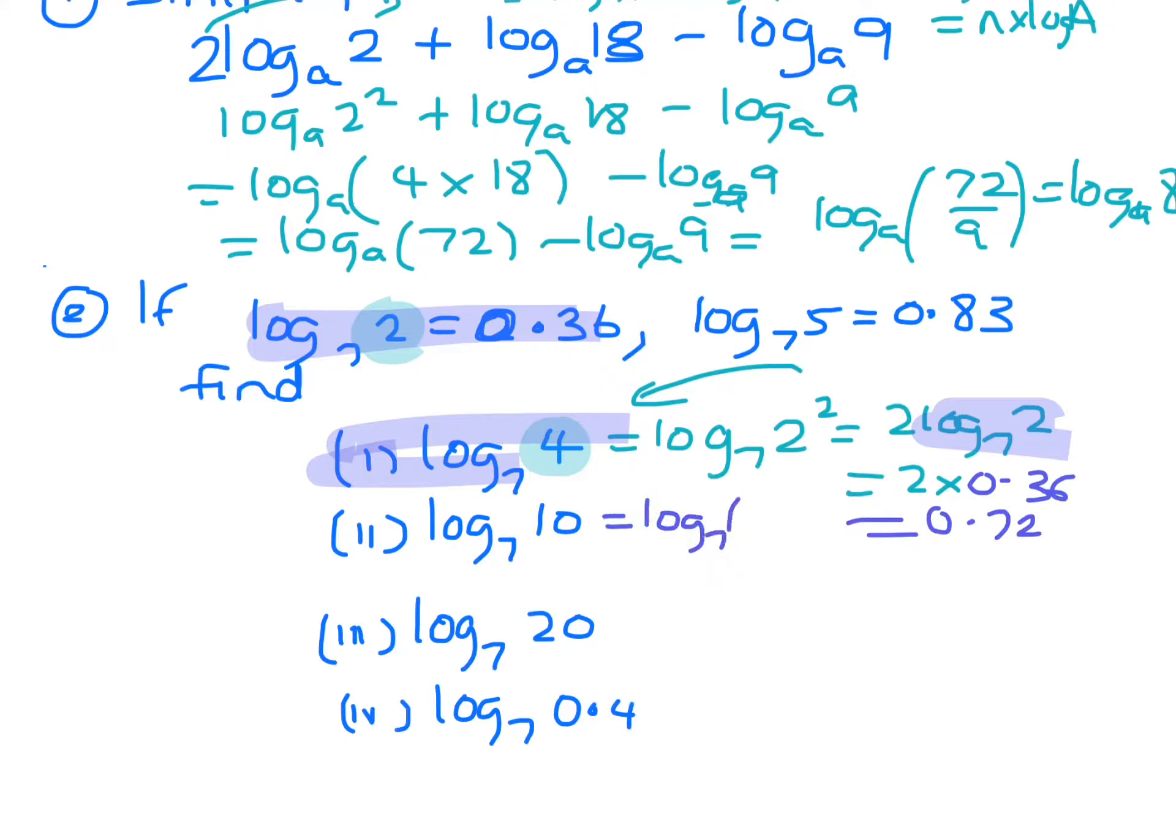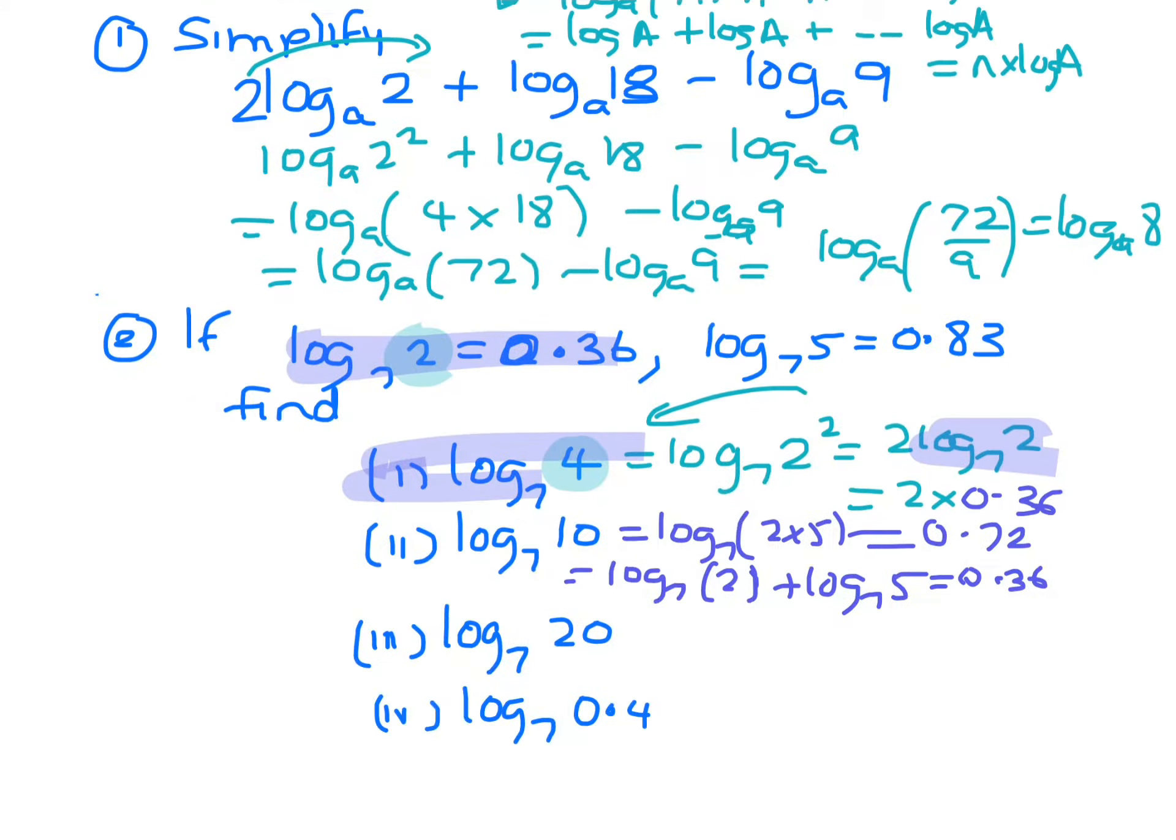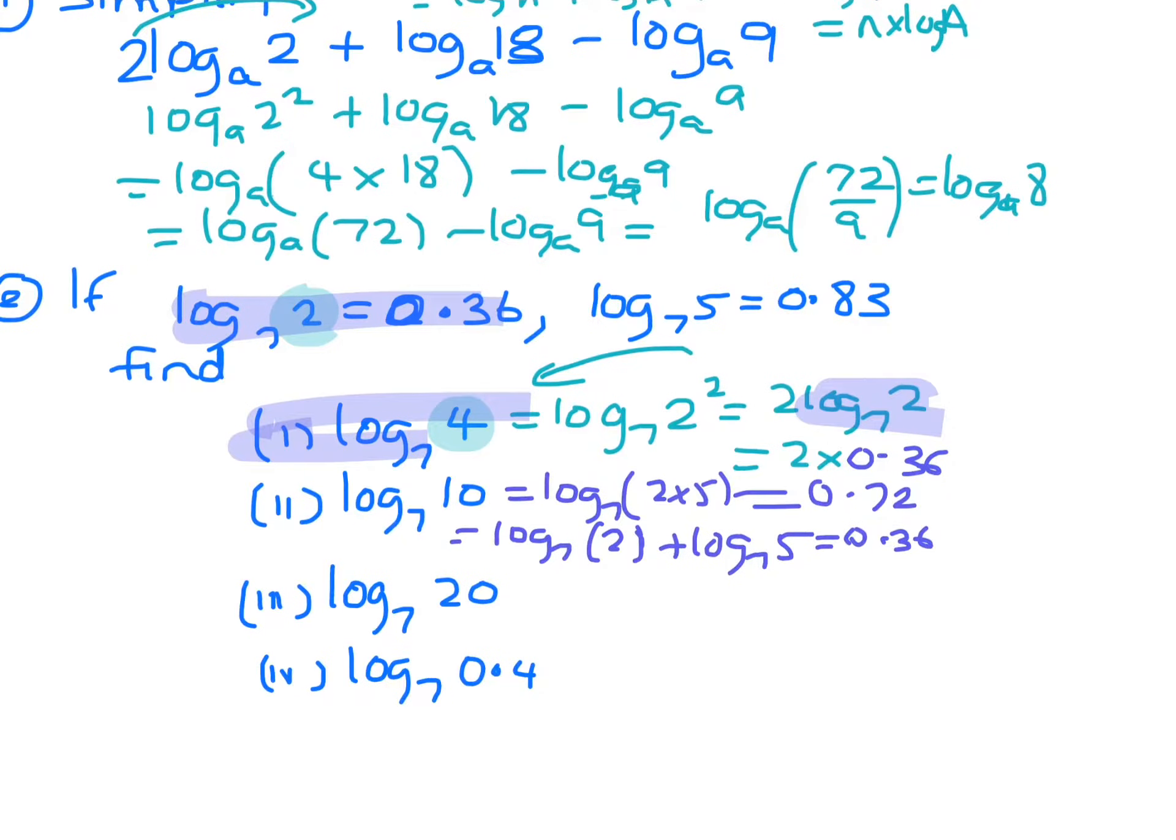So this one is log 7 base 10. So you can split that to 2 times 5, and then because it's multiplication we can add them. Okay, so log 2 is 0.36 plus 0.83. So 0.36 plus 0.83 equals 1.19.